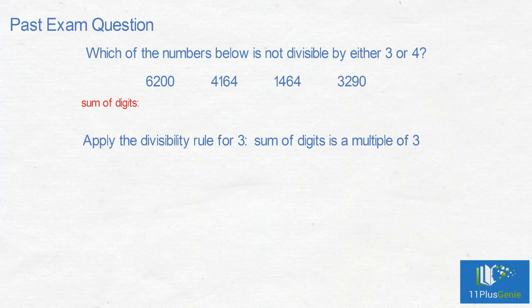6200: 6 add 2 add 0 add 0 equals 8. 4164: 4 add 1 add 6 add 4 equals 15. 1464: 1 add 4 add 6 add 4 equals 15. 3290: 3 add 2 add 9 equals 14. We can eliminate 4,164 and 1,464.